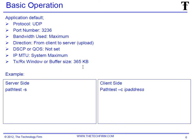Transmit, receive, window, or buffer sizes are 365k for UDP or TCP. These are all the defaults and obviously you can override and change all of them. On the server side we've got pathtest dash-s — good to go. On the client side we do pathtest dash-c, which means I'm in client mode, and then the IP address or name of the server.